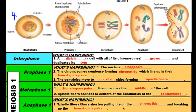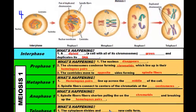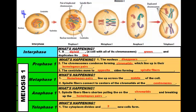Then we go into telophase where the cytoplasm divides and two new cells form. After telophase I, interphase will not start back up again. Even though the cells form and the chromatids unwind back into loose DNA and the nucleus reappears, there is no DNA replication going on. So we jump straight into prophase II.